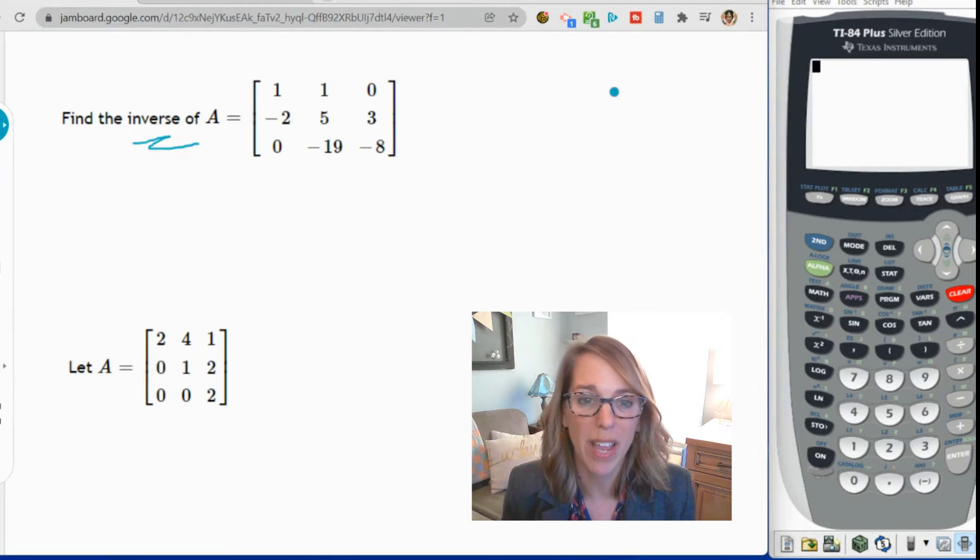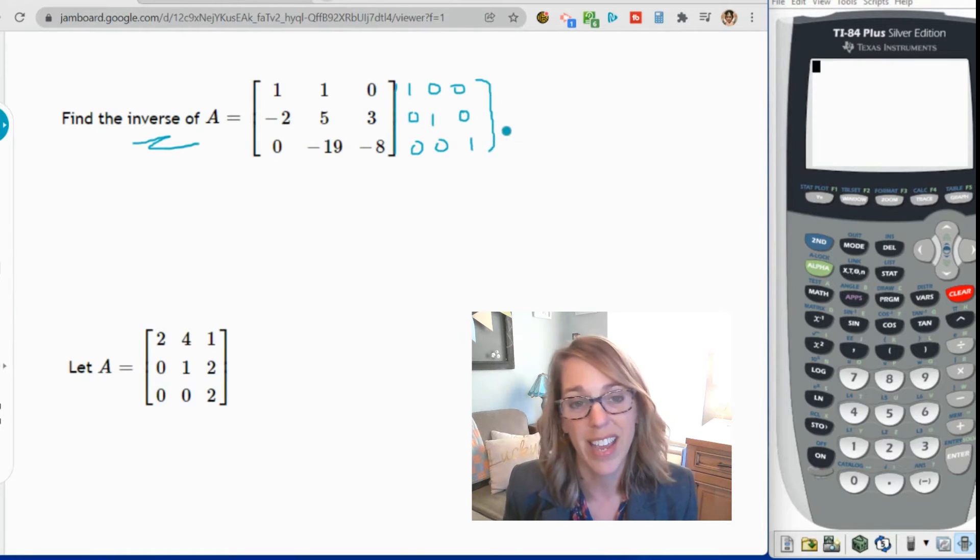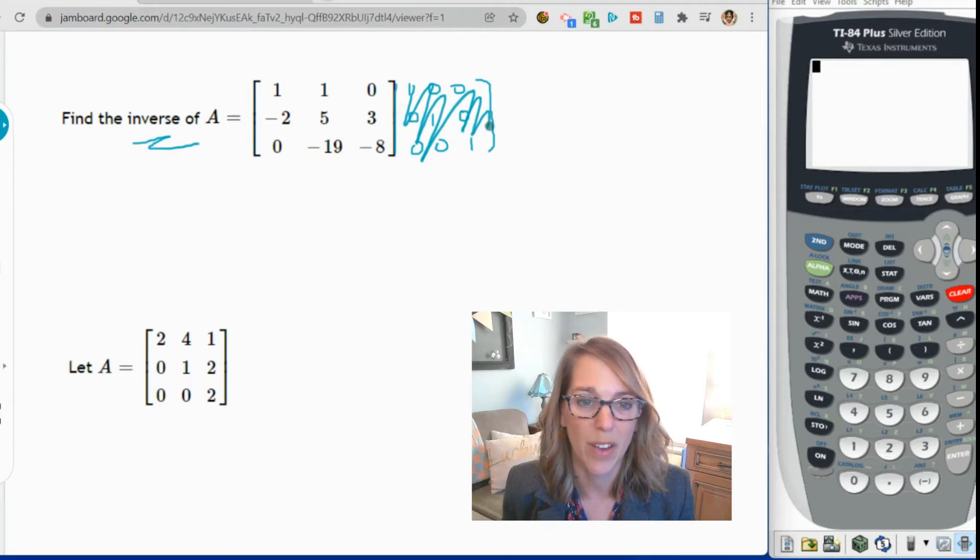Now if you were doing this by hand, you would take this matrix and you would augment it with the identity matrix. If this is what you're looking for to row reduce this guy by hand, go ahead and take a look at the video that I've got here on the screen and it's also posted in my description. We're not going to augment it though. Instead, we're just going to put it right into the calculator and ask for the inverse. Let's go ahead and get started.